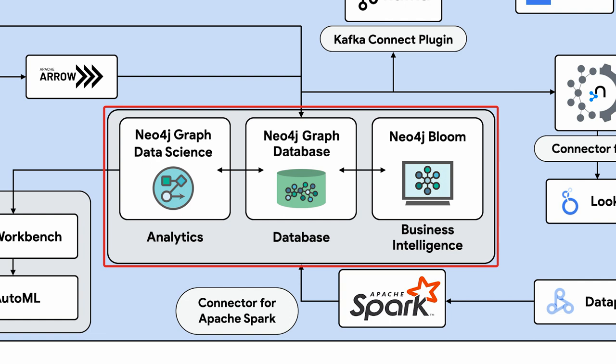One of the newest features, added about a month ago, is that you can actually make calls in Bloom into the graph data science component. So you can say, give me a centrality coloring on all these nodes so I can see how central they are to the graph. That's so cool because it's efficient, but it also gives people the ability to take that information and visualize it and get insights from it all in one go.